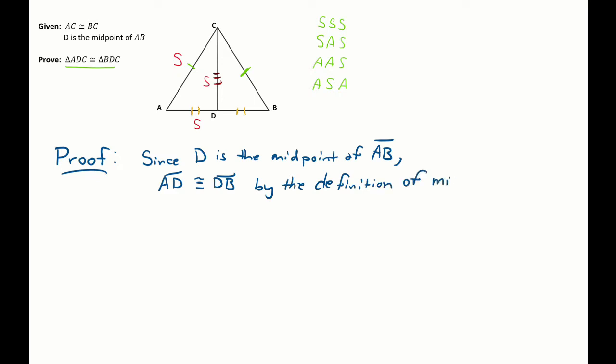Okay, so I set up why I can say a statement, I made my statement, and then I justified it. The next thing I said as I was talking through this is that CD is congruent to itself, it's that shared side. So I can say by the reflexive property, by the reflexive property of congruence, CD is congruent to CD. Okay, so it's congruent to itself.